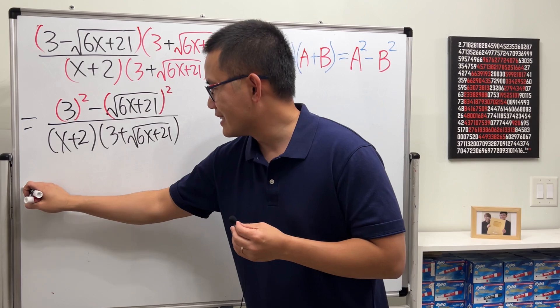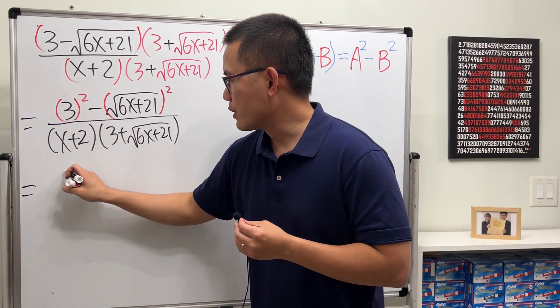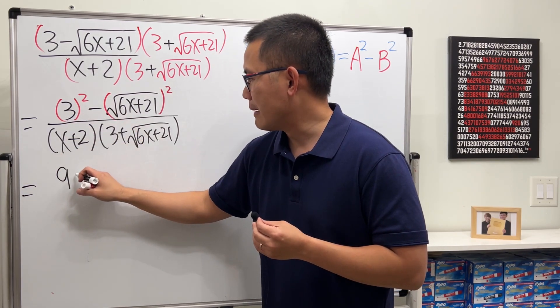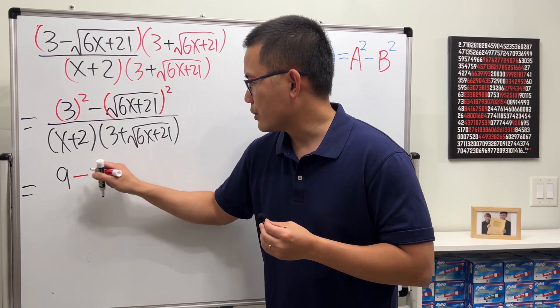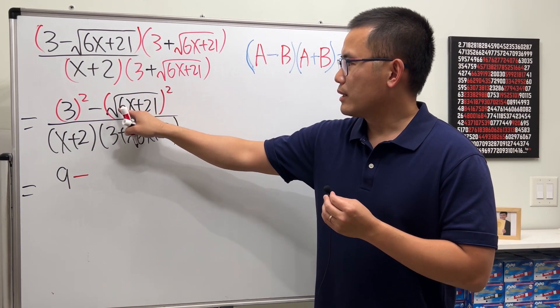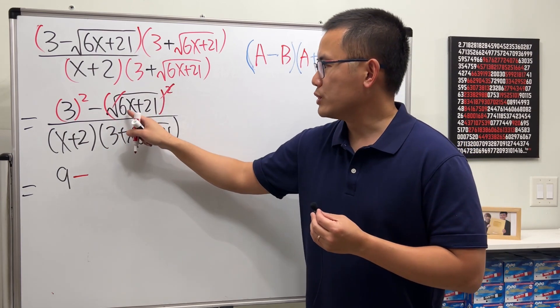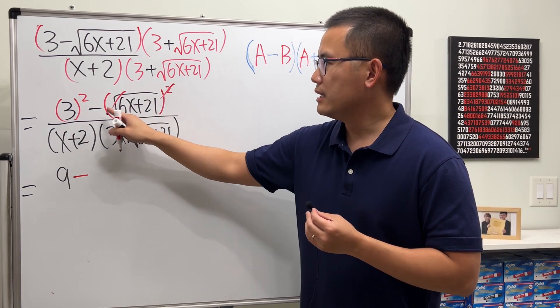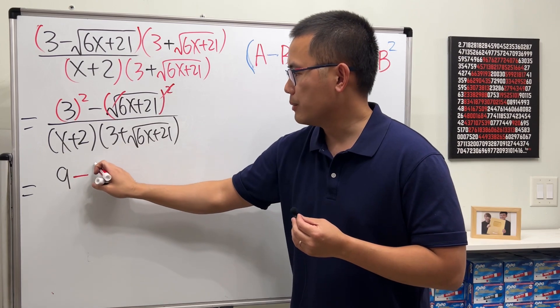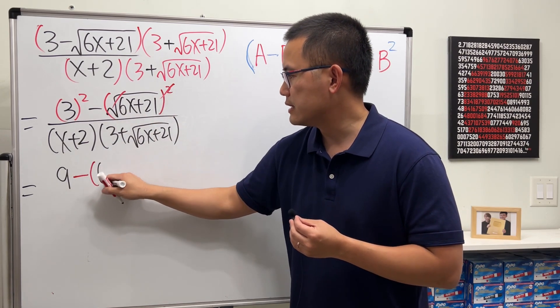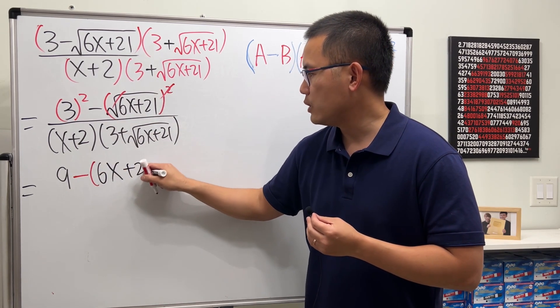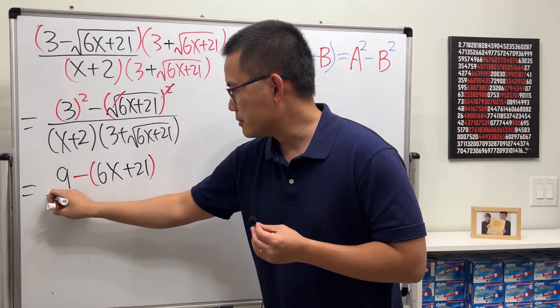Now have a look. This right here is of course 9, and then we have the minus. Put on red now. Square root and square, they cancel, so no more square roots, but we still have this right here. It's being subtracted from 9, so make sure we put parentheses for the 6x plus 21. And then the bottom stays the same.